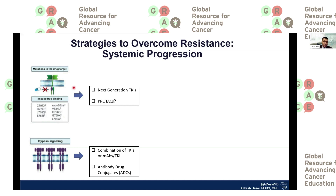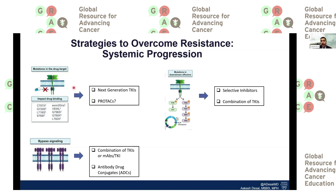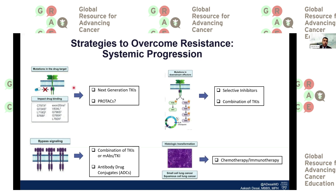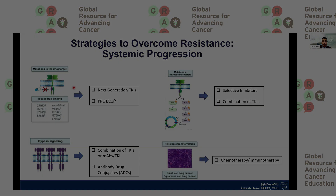For mutations in downstream effectors, we need selective inhibitors of those downstream effectors as well as combination TKIs. For histologic transformation, our current strategies include using chemotherapy or immunotherapy for targeting small cell and squamous cell lung cancer.